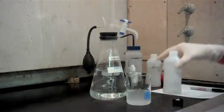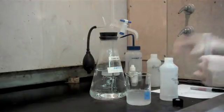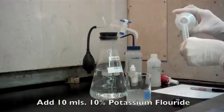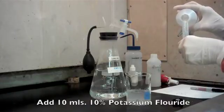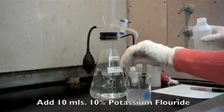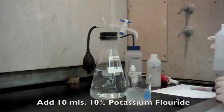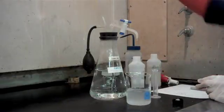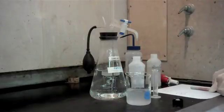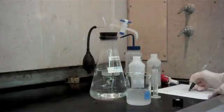And what we're going to do to make sure that we've gotten completely to the endpoint is add another 10 mils of the potassium fluoride, just to make sure the solution does not return to pink, which it does not. So we have our second endpoint, and it's 1.5 mils of the one normal hydrochloric acid.